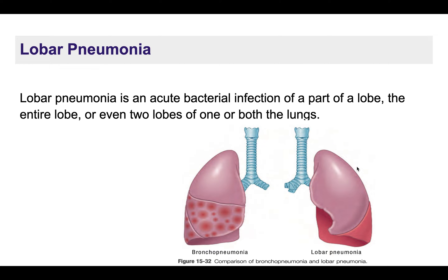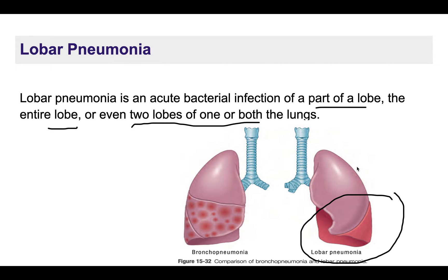In lobar pneumonia, one lobe is affected — it can be a part of a lobe, an entire lobe, or even two lobes of one or both lungs, but mostly one lobe is involved. In bronchopneumonia, there is a patchy involvement of the lung.